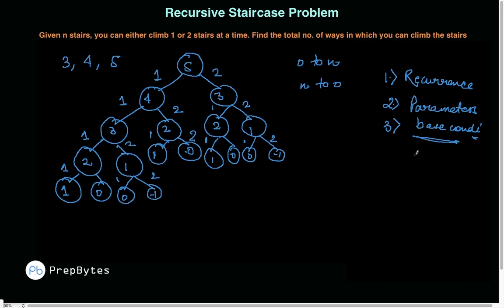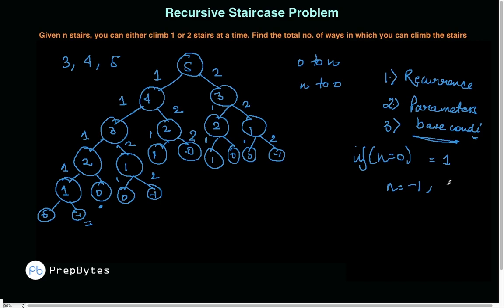For base conditions: when n equals 0, there's exactly one way — do nothing and stay where you are. So return 1. When n equals minus 1, that's an invalid state, so return 0. When n equals 1, there's only one option — take one step — so that's already covered. These form our base conditions.